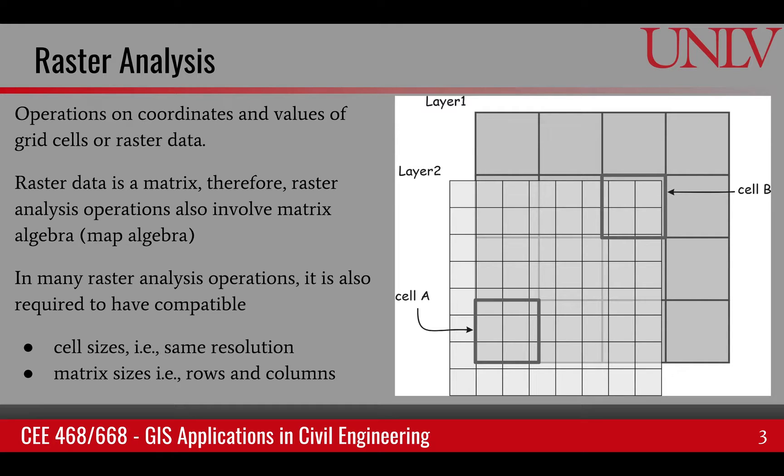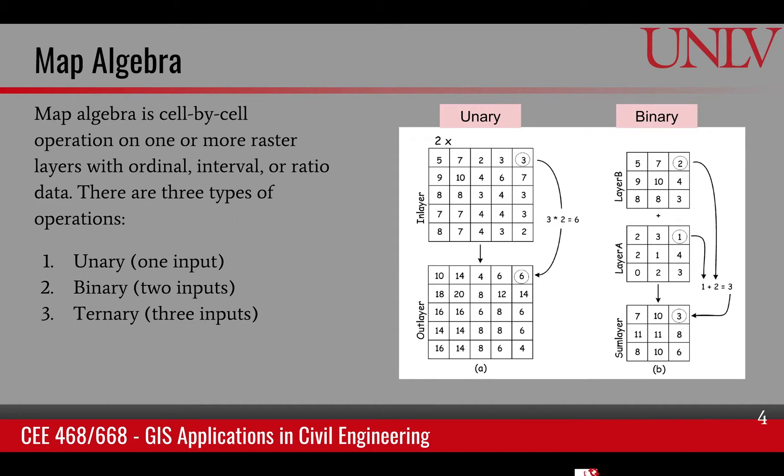In raster analysis, map algebra is one of the key ways we manipulate or process data. Map algebra is basically matrix calculation and it works only with raster layers that are ordinal, interval, or ratio type data. There are three types of operations: unary, which requires one input, binary, which requires two inputs, or ternary, which requires three inputs.